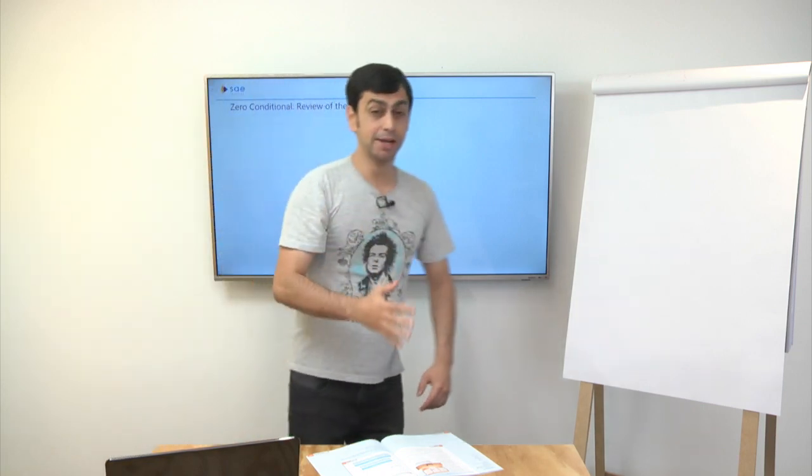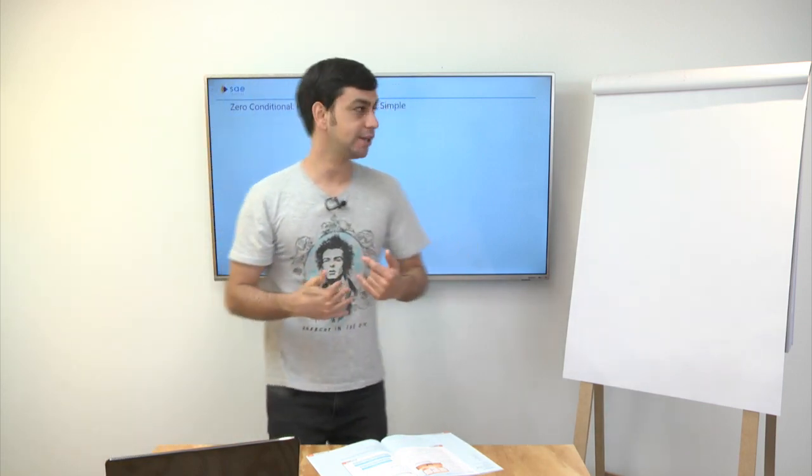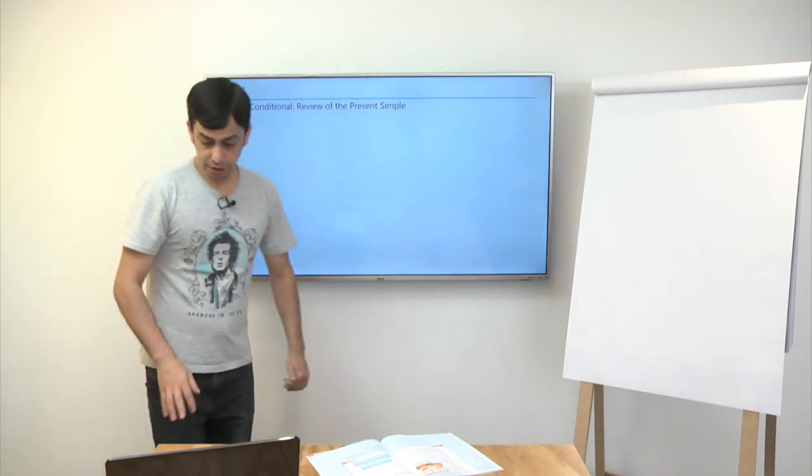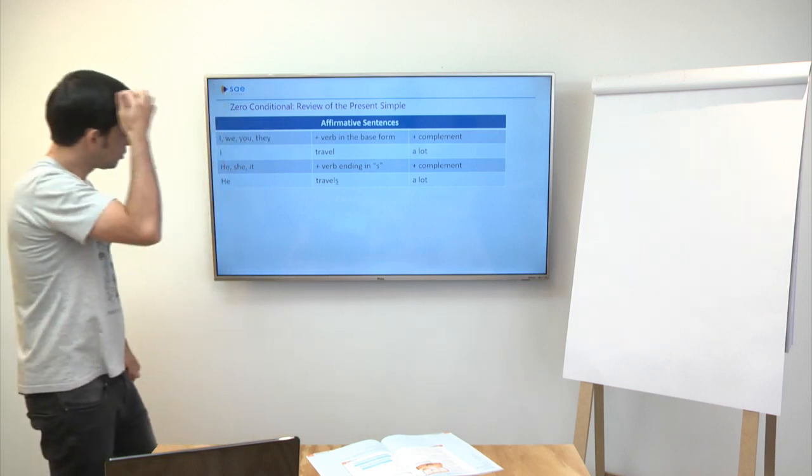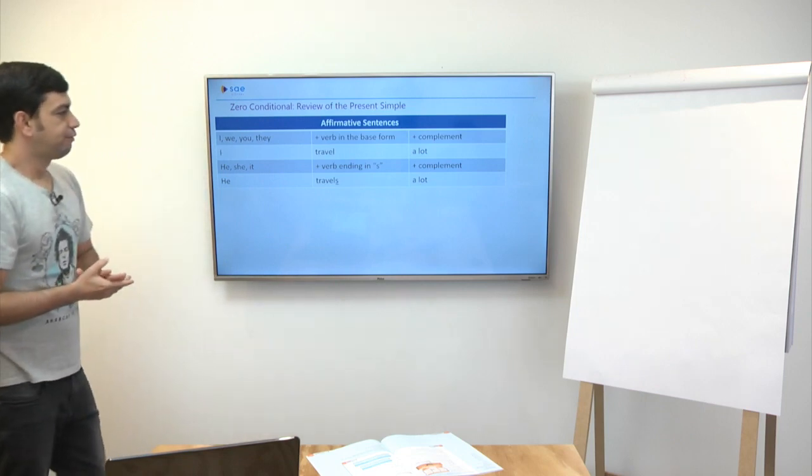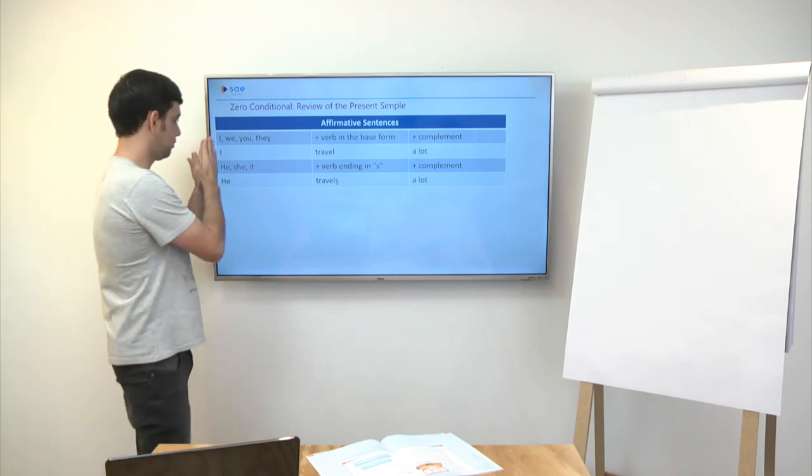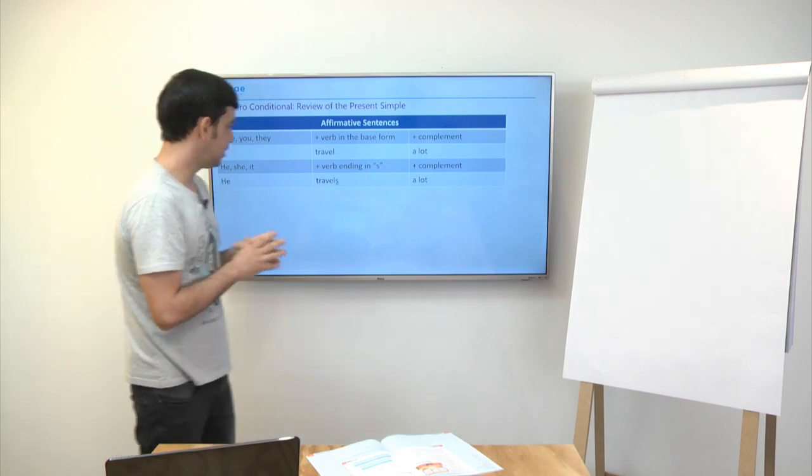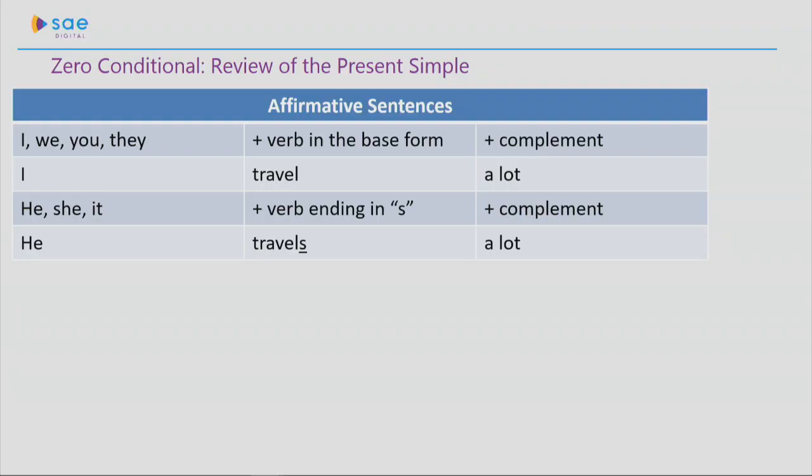For you to master the use of this structure well, you need to remember the Present Simple. So let's have a look here and do a quick review. Affirmative sentences. With I, we, you or they, I will use the verb in base form followed by a complement. For example, I travel a lot. Now, with he, she or it, my verb will end in S or ES and then comes the complement. For example, he travels a lot.